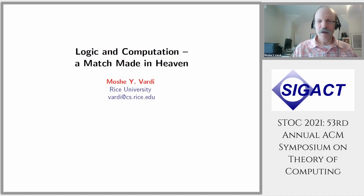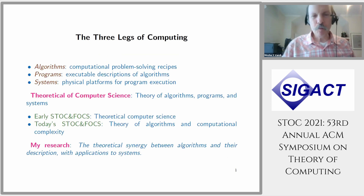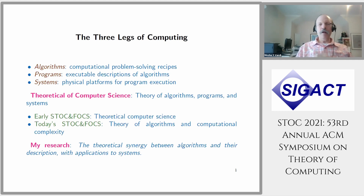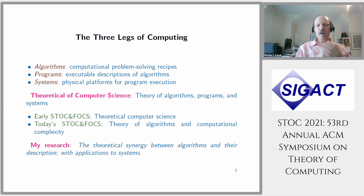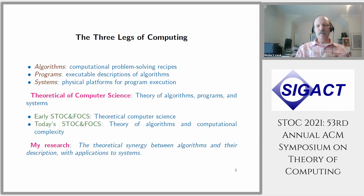Logic and computation: a match made in heaven. When I look at computer science and computing, I see three legs. One leg, which is more theoretical and conceptual, is algorithms — the critical component of what we do in computer science. I call them computational problem-solving recipes. But algorithms live in platonic space; to make them run in the real world we first need programs, which are executable descriptions of algorithms, and we need systems, which are physical platforms on which we execute these programs.